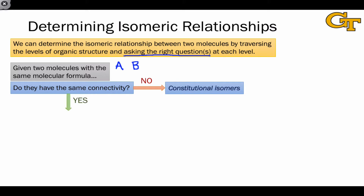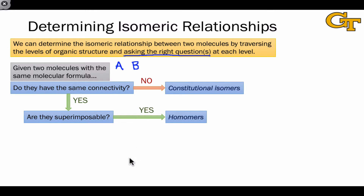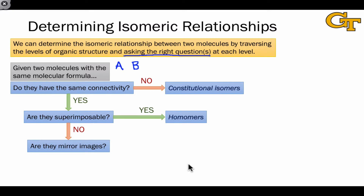If they do have the same connectivity, that means they have the same constitution, so we have to move to a more detailed level of organic structure to determine the exact isomeric relationship. The next question worth asking is: are they superimposable? If you can overlay the two structures perfectly, then you're looking at two different views of the same molecule — they're homomers.